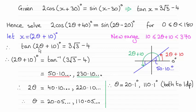So now all I've got to do is work out the inverse tan of 3√3 minus 4 and that will give us 2θ plus 10 degrees. And make sure your calculator is in degrees mode and we get 50.10 and so on degrees.